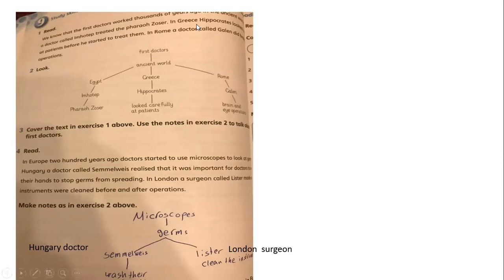Look here. As a summary for the paragraph, for example, the first doctors, all the first doctors are from the ancient world. That country: Egypt, Greece, Rome, the name of every doctor and what every doctor did. Look here. For example, he treated Djoser. Looked carefully at the patient, the brain and eye operations.